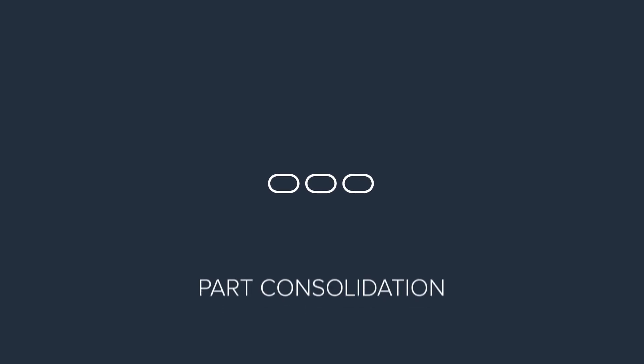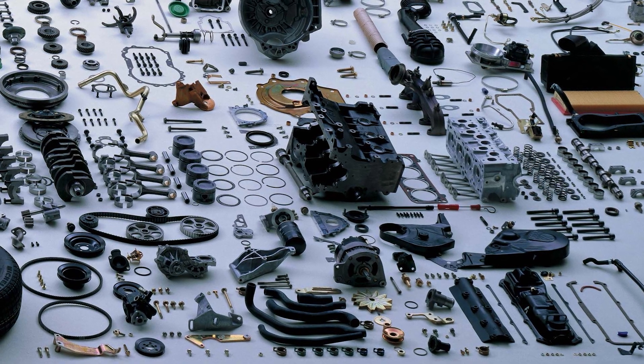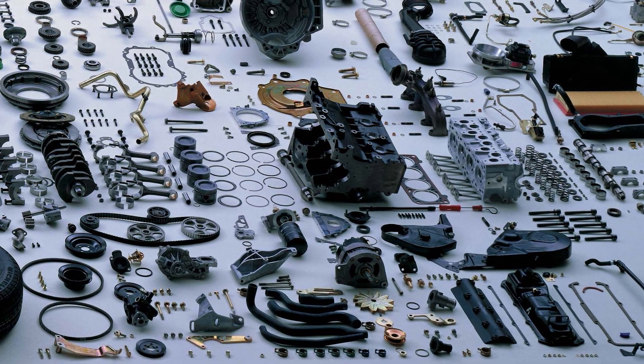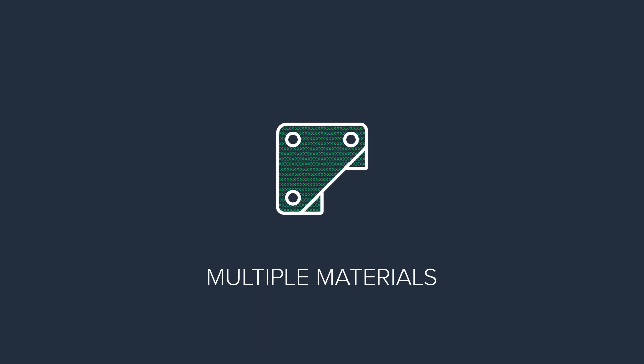Using AM, we can also think about consolidating assemblies into fewer parts. That's because a lot of assemblies are so because we have to respect the constraints of existing manufacturing techniques. Therefore, by 3D printing we can consolidate several parts into one and save a lot of cost and time. With 3D printing we can also design parts to be made of multiple materials, and we're starting to design materials directly for additive manufacturing.